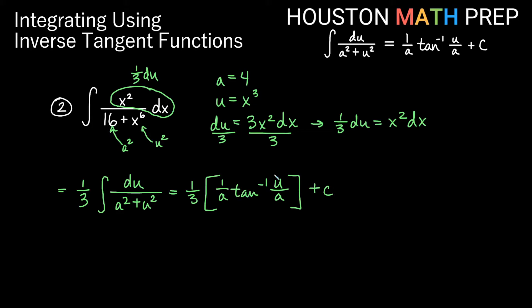And now let's just go ahead and sub back our a and our u. So we would have 1 third times 1 over a would be 1 over 4 inverse tangent of u over a would become x cubed over 4 plus our constant. And we should go ahead and clean that up, that 1 third times 1 fourth. So we'll say 1 twelfth inverse tangent, you could put this in parentheses if you want, x cubed over 4 plus constant.